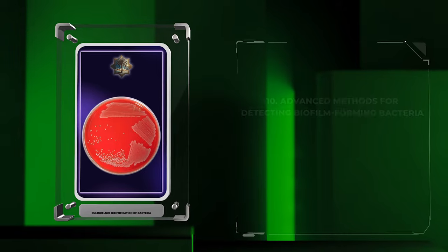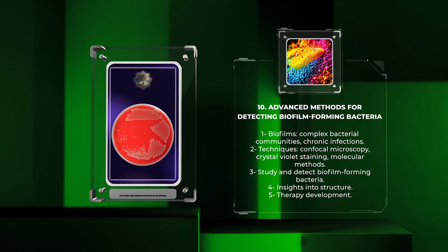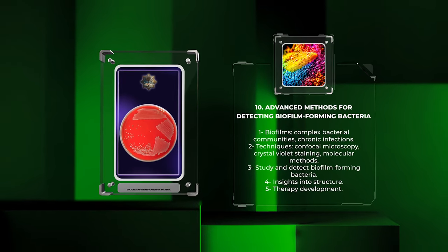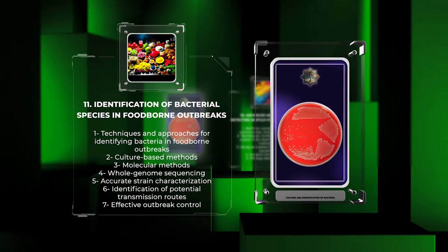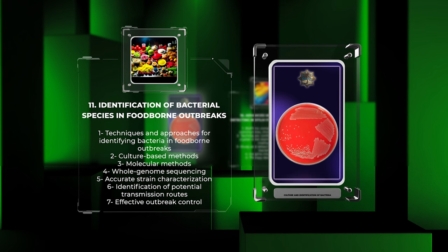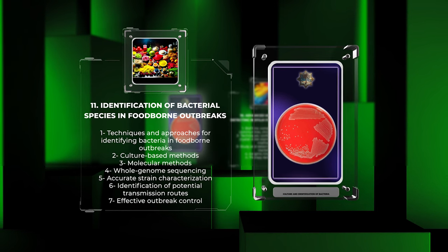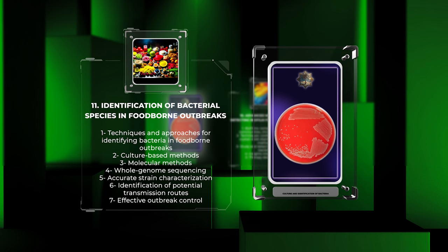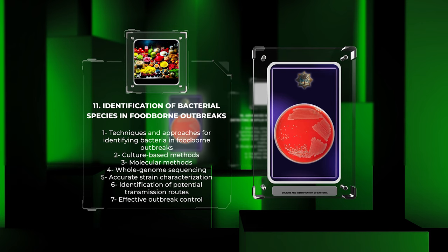Biofilms are complex bacterial communities associated with chronic infections. Techniques like confocal microscopy, crystal violet staining, and molecular methods help study and detect biofilm-forming bacteria, providing insights into their structure and aiding in therapy development. We will also discuss techniques and approaches for identifying bacteria in foodborne outbreaks, covering culture-based methods, molecular methods, and whole genome sequencing for accurate strain characterization and identification of potential transmission routes. This information is crucial for effective outbreak control and public health safety.